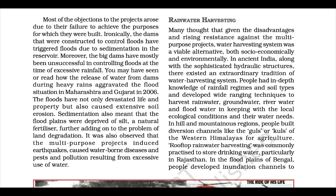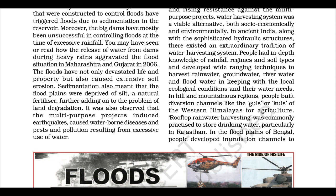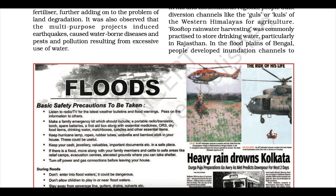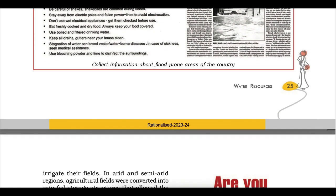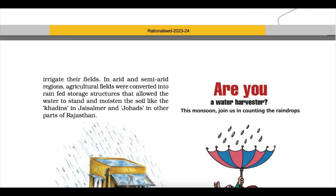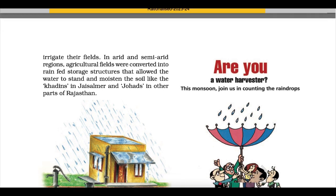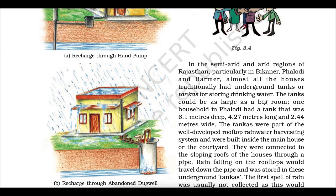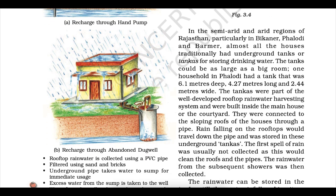In hill and mountainous regions, people built diversion channels like the guls or kuls of the Western Himalayas for agriculture. Rooftop rainwater harvesting was commonly practised to store drinking water, particularly in Rajasthan. In the flood plains of Bengal, people developed inundation channels to irrigate their fields. In arid and semi-arid regions, agricultural fields were converted into rain-fed storage structures — like khadins in Jaisalmer and Barmer, or johads in other parts of Rajasthan.